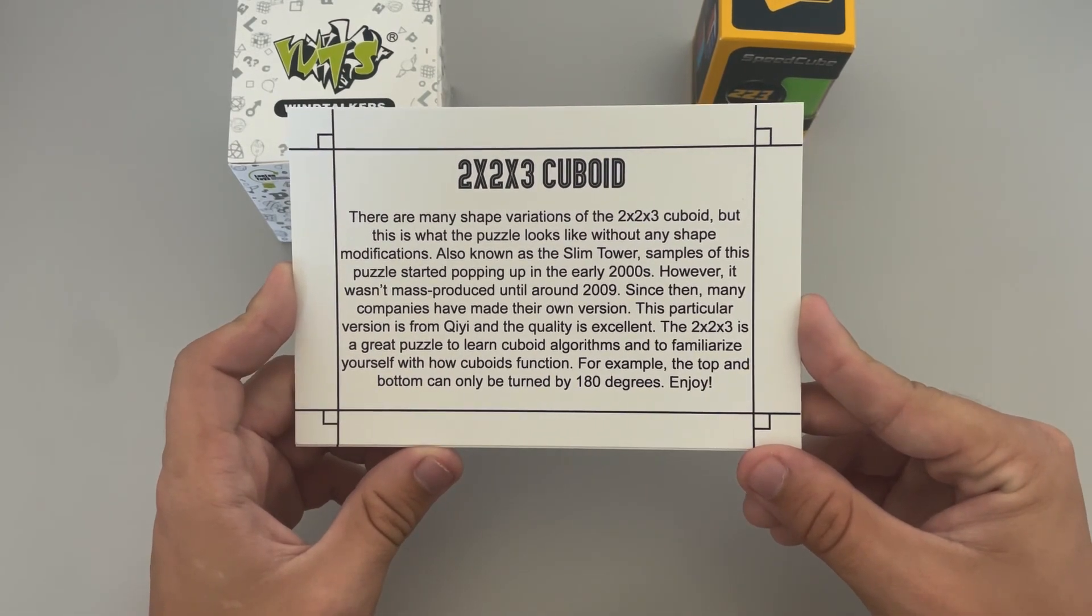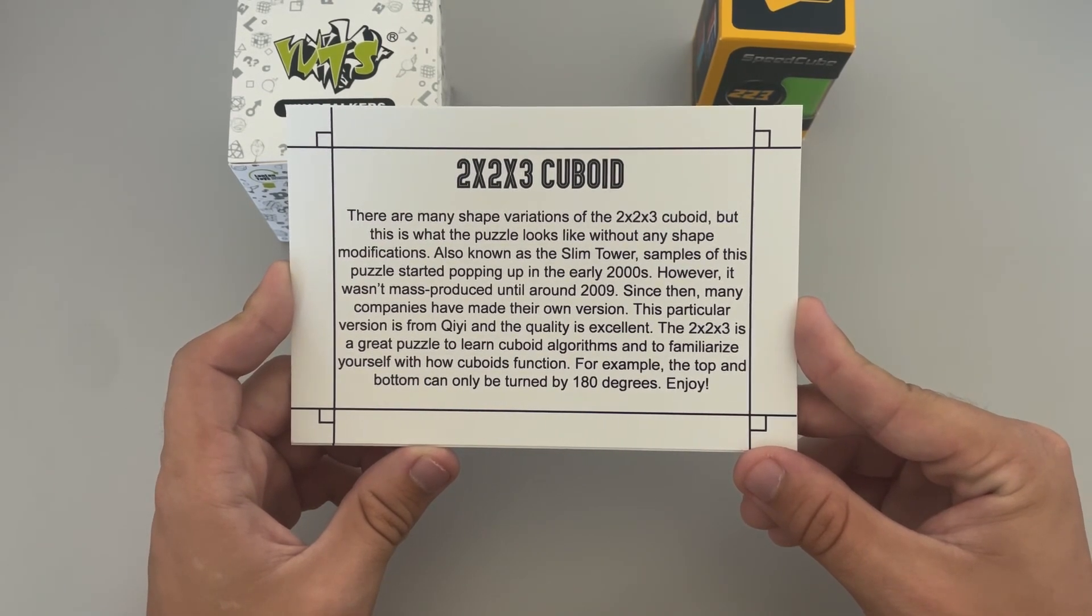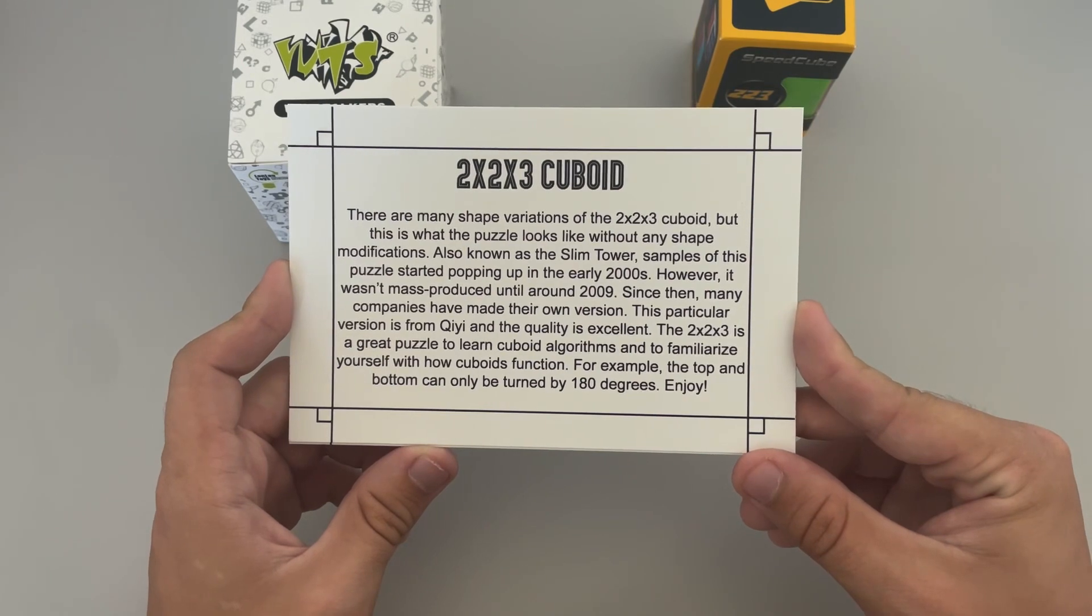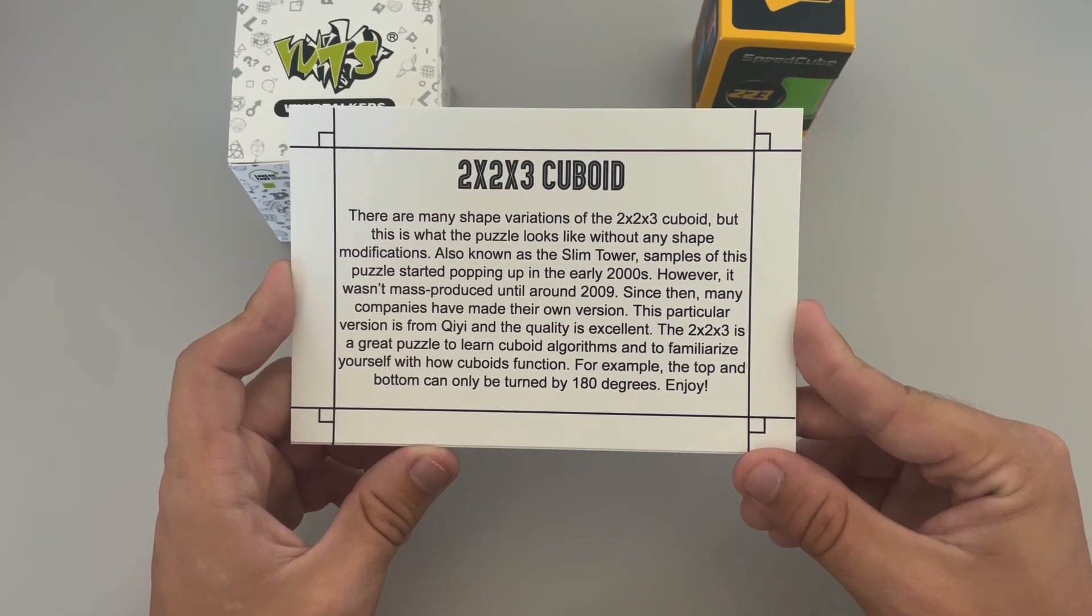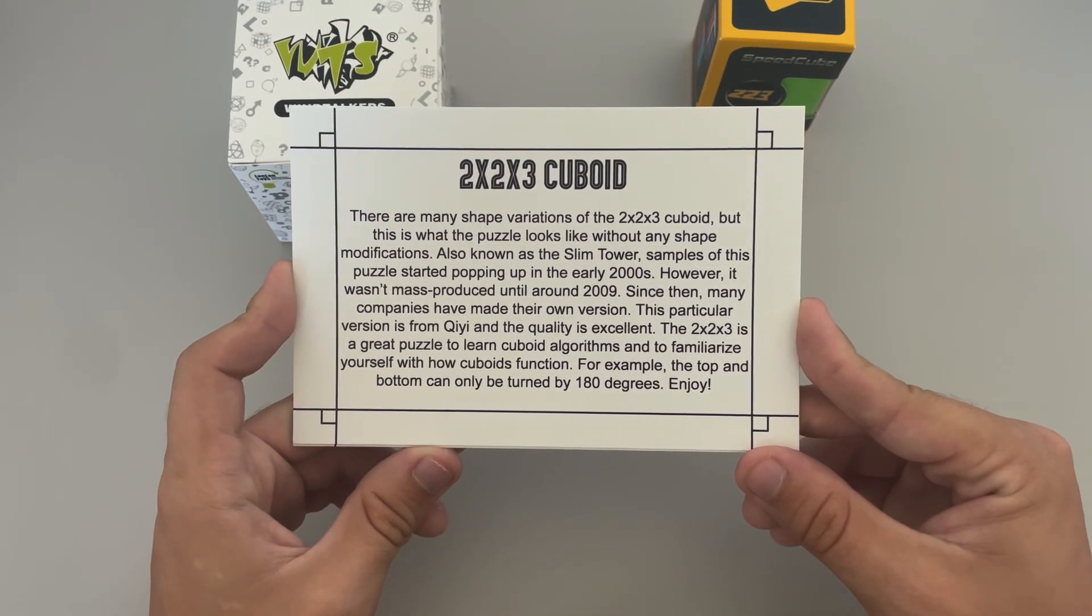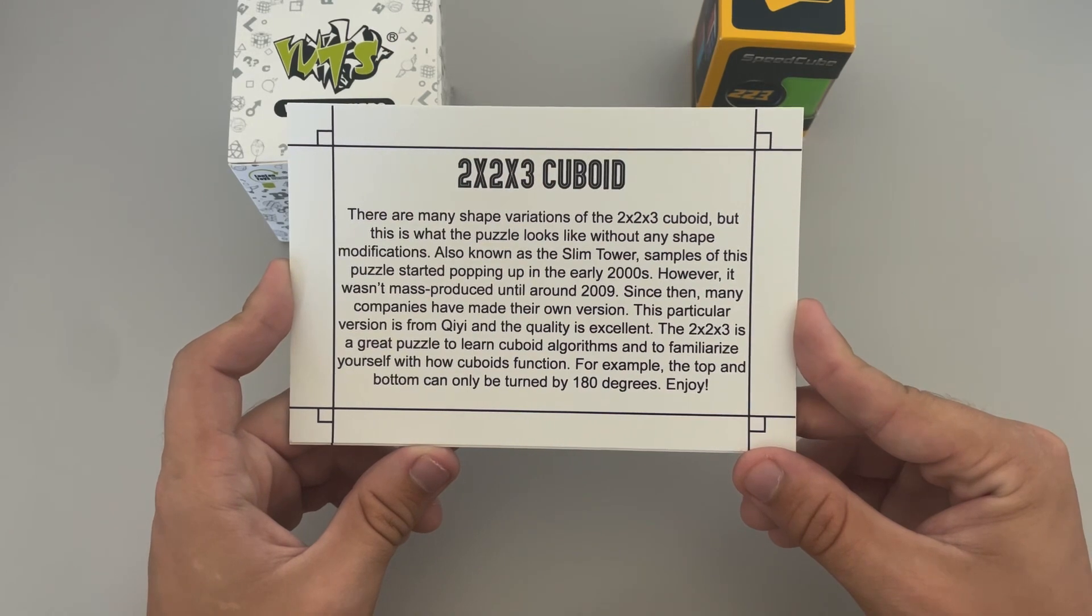Since then, many companies have made their own version. This particular version is from Chidi and the quality is excellent. The 2x2x3 is a great puzzle to learn cuboid algorithms and to familiarize yourself on how cuboids function. For example, the top and bottom can only be turned by 180 degrees.